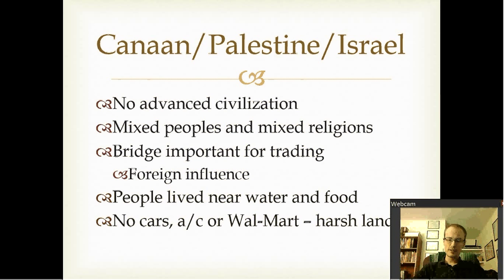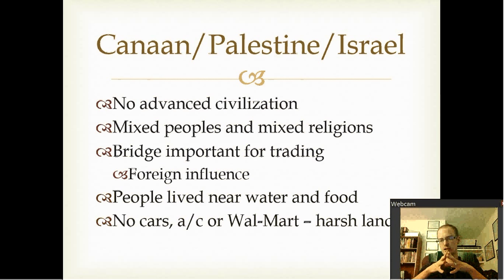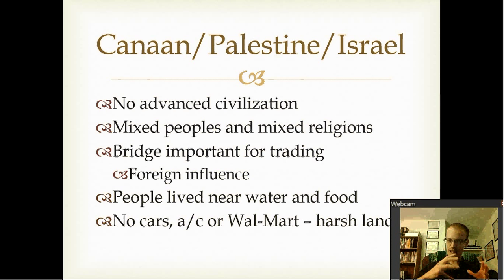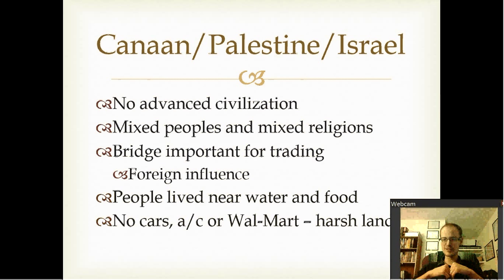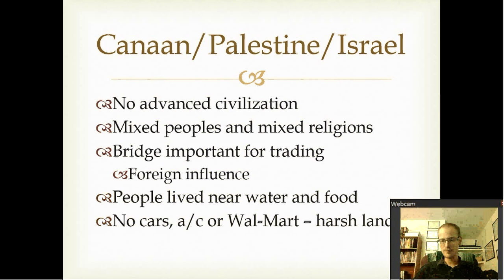Then there's this third area — Canaan, Palestine, Israel — it has many different names. We've seen Mesopotamia, the land of empires, and Egypt. But now we see this land stuck in between tensions — and even today it's still stuck in between tensions, with a lot of different people pulling on the same plot of land. In Canaan there really was no advanced civilization. There were lots of different tribal peoples, mixed peoples, mixed religions, a lot of different ideas — really no unifying factor.